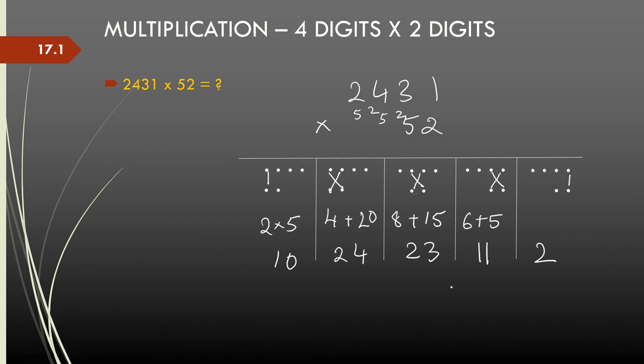Now, we can start writing down the answer by passing the extra digit to the left as always. So, this becomes 4, the 2 goes here, this becomes 6, and the 2 goes here, this becomes 12. So 1, 2, 6, 4, 1, 2 is the product of 2431 and 52.